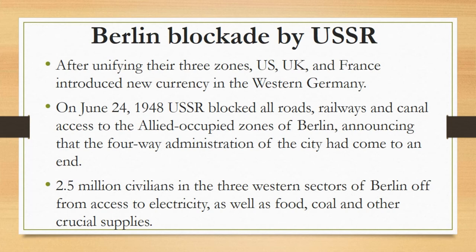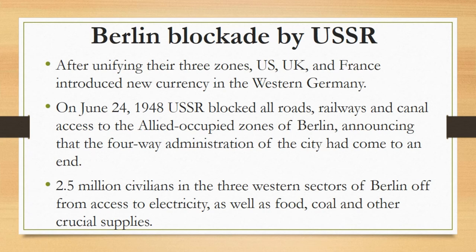With their blockade, the Soviets cut some 2.5 million civilians in the three Western sectors of Berlin off from access to electricity, as well as food, coal and other crucial supplies. Though the Red Army far outnumbered Allied military forces in and around Berlin, the United States and Britain retained control of three 20-mile wide air corridors from West Germany into West Berlin, according to a written agreement with the Soviet Union from 1945. After this blockade, there was no direct link for the US, UK and France to access West Berlin, as the USSR had blocked the western borders of Berlin while the eastern side was already in its control.